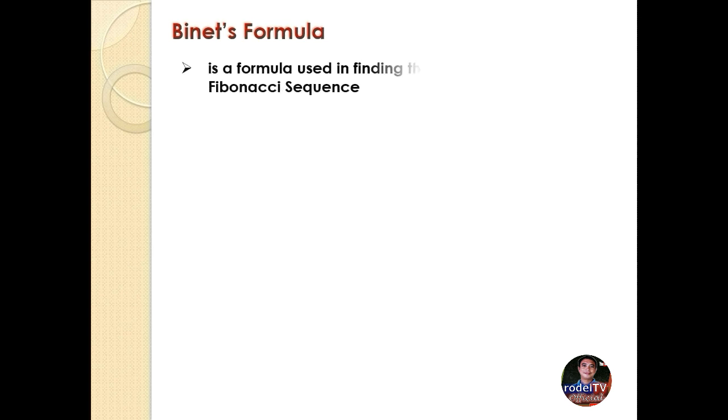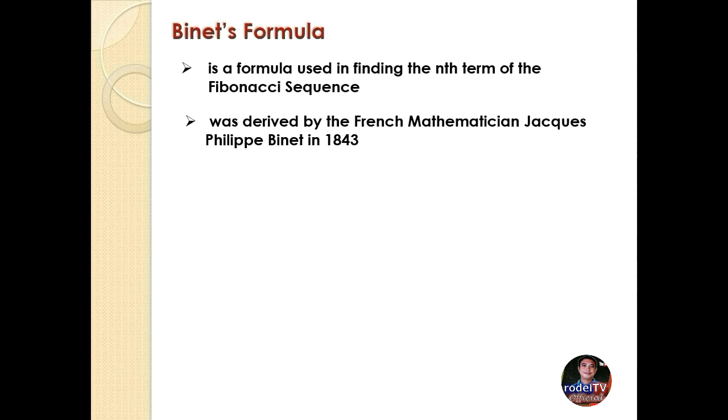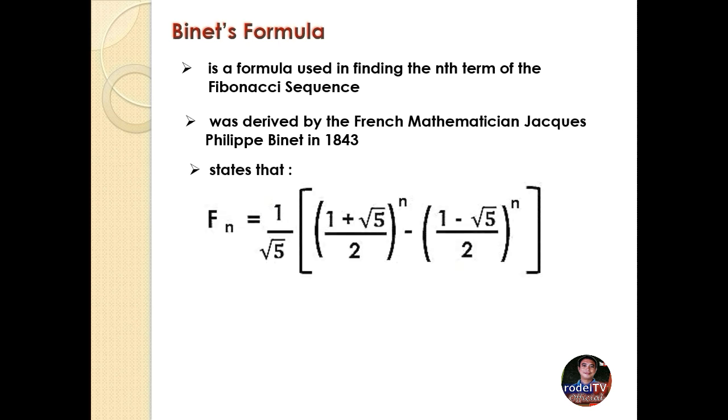What is the Binet's formula? It is a formula used in finding the nth term or the missing term of the Fibonacci sequence. It was derived by the French mathematician Jacques Philippe Binet in 1843.